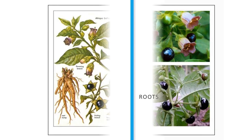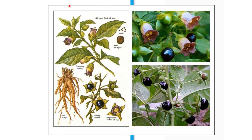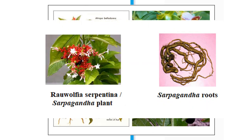Examples of medicinal plants whose medicinal value is derived from their roots include the belladonna or the Atropa belladonna plant. We also have the sarpaganda, or Rauwolfia serpentina, whose medicinal value is also derived from its roots.